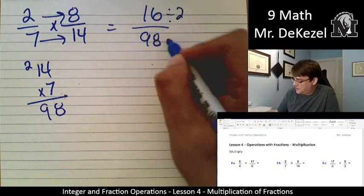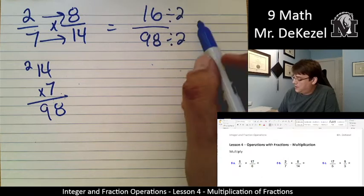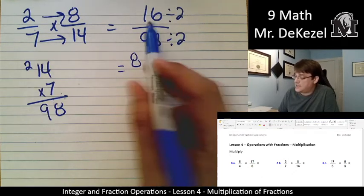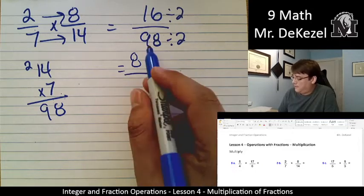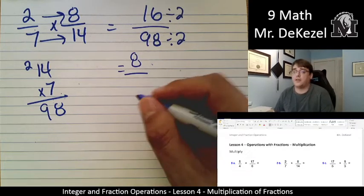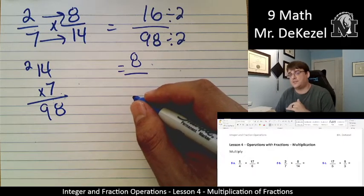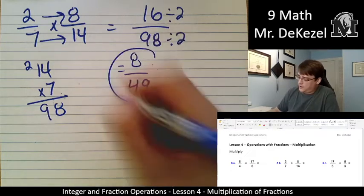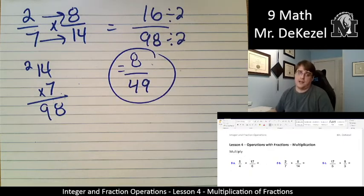So let's divide this by 2 and this by 2. 16 divided by 2 is 8, and 98 divided by 2. So I know that 100 divided by 2 is 50, so I take 98 divided by 2, I'm going to get 49. And I know that nothing goes into both 8 and 49, so there is our answer.